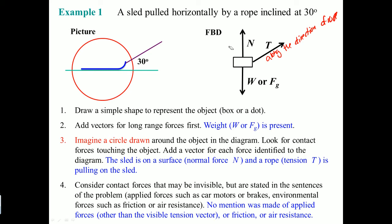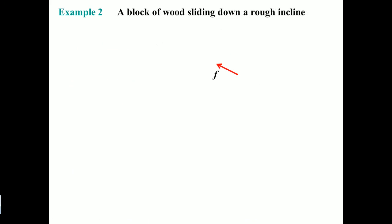No mention was made of applied force other than the invisible tension force, friction, or air resistance. So in this problem there are only three forces: normal force going up, force of weight going down, and the tension force along the rope. Now you can practice it.